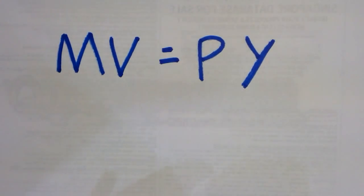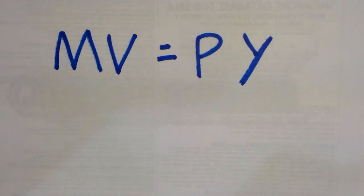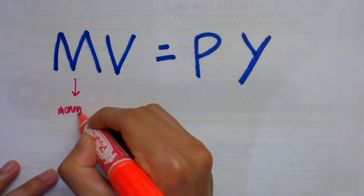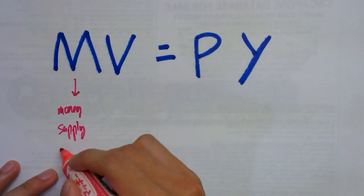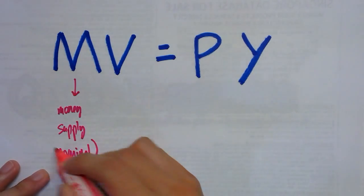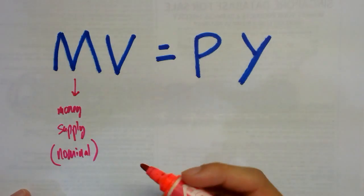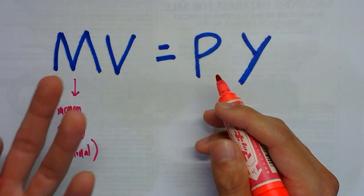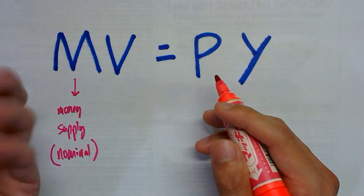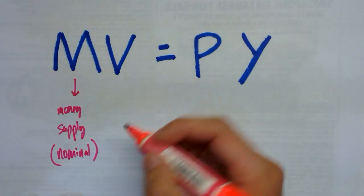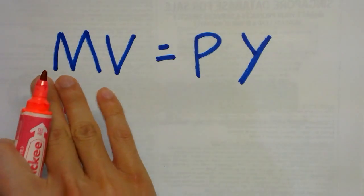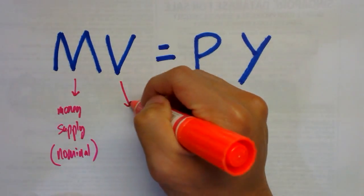Let's go through the variables one by one. M is the money supply in the economy, and this is in nominal terms. The difference between nominal and real balances is that nominal is in value form — how many million or trillion dollars the economy has in monetary form. Your real money supply would be M over P. Keep in mind that M here is a nominal value.